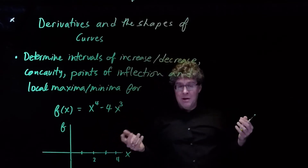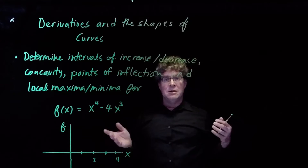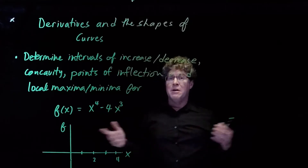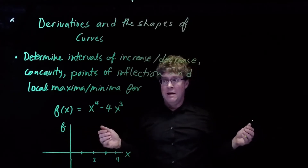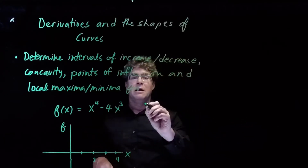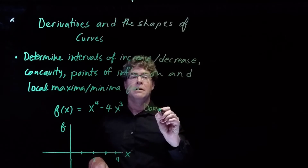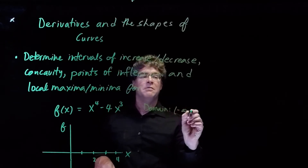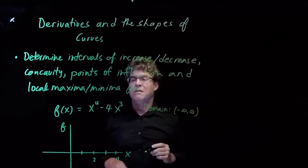To start with, we want to talk about the domain of the function to make sure we look at the function across the entire domain. The domain for f is going to be the real line, minus infinity to infinity, because f is a polynomial.